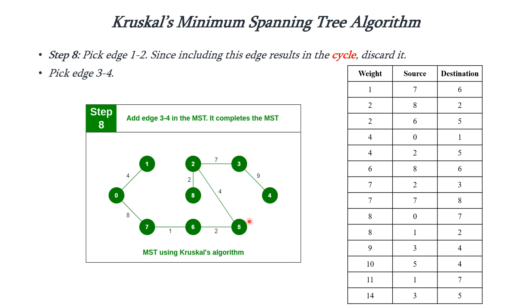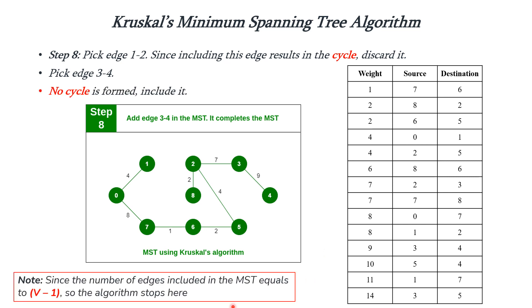Now we check whether we have attained V-1 edges. Counting the edges in the spanning tree: 1, 2, 3, 4, 5, 6, 7, and 8. The total number of vertices in our graph is 9, so V-1 equals 8, and we have 8 edges. So we stop here. The total edge count equals V-1, thus our final minimum spanning tree is constructed and we stop the algorithm.